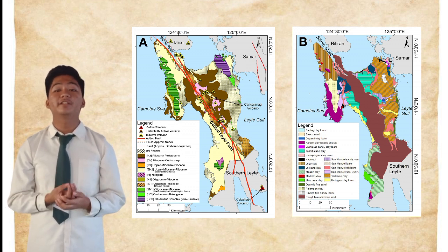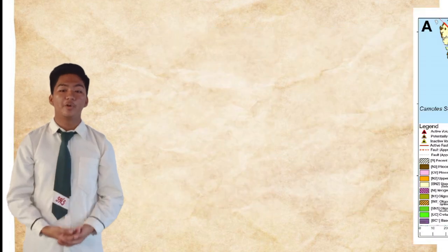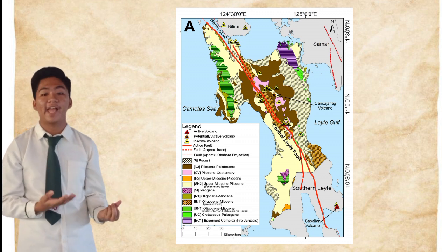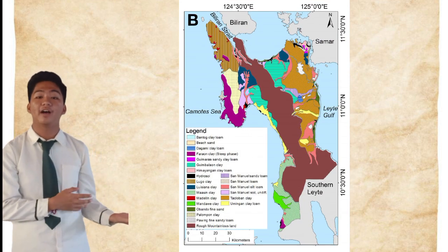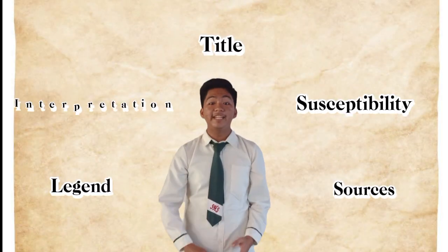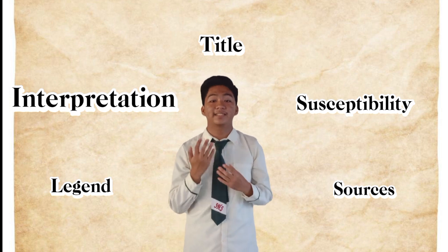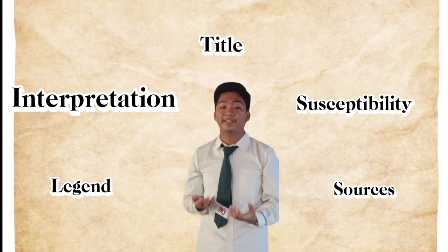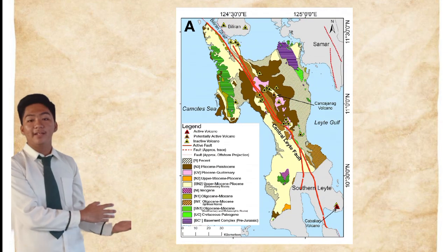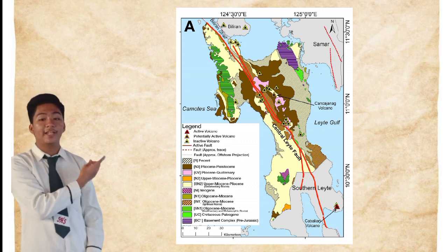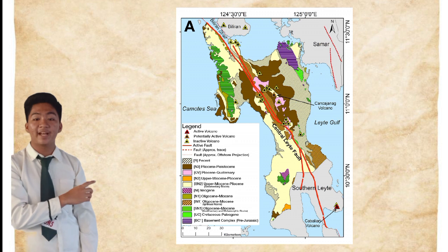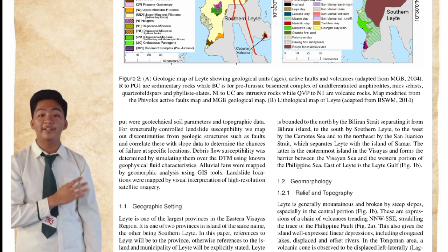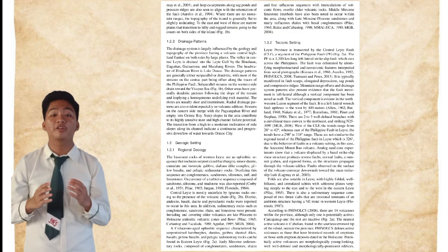As shown here, in Map A it shows the volcanoes, fault lines, and age of the rocks in the region of Leyte, and in Map B it shows the different types of land across the region of Leyte. The interpretation of a map involves analyzing the presented data to draw conclusions about the geological features, history, and potential hazards of a particular area. For example, in the map we can observe a fault line going through the entire island of Leyte, with the projection predicted near the island of Biliran and trace faults within the region of Western Samar. This means earthquakes are most likely to occur within this area and it is predicted that the fault will go through the Biliran Strait.